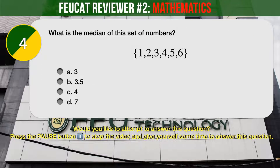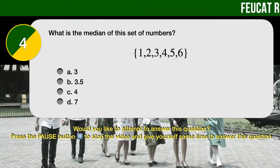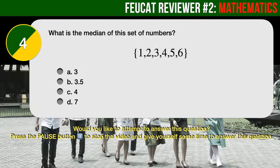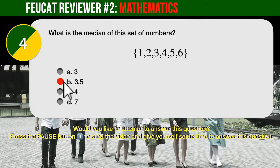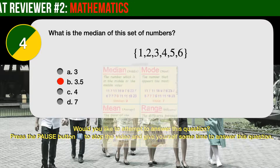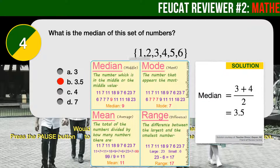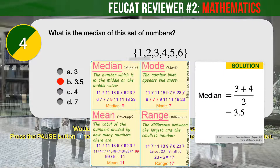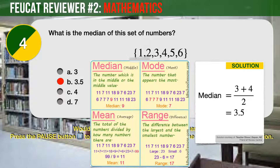Question Number 4. What is the median of this set of numbers: 1, 2, 3, 4, 5, 6? A: 3. B: 3.5. C: 4. D: 7. The correct answer is B, 3.5. The median is the middle value. Since there are 6 numbers in all, there is no single middle number. The middle numbers are 3 and 4. To get the median, we simply take the average of the two middle numbers, which is 3.5.